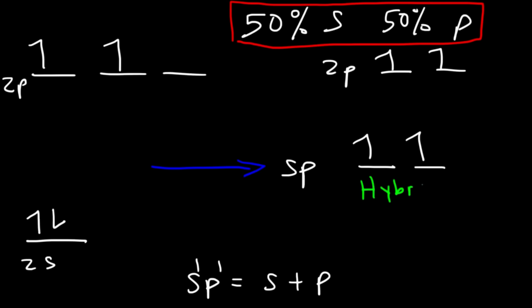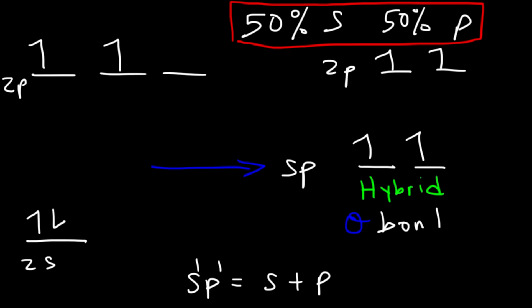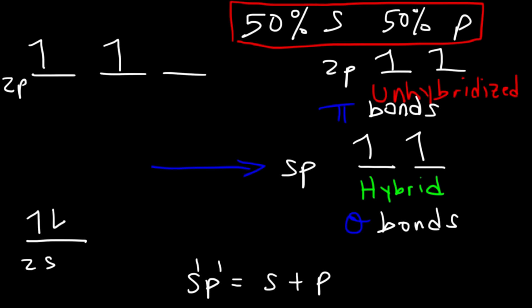Hybrid orbitals are used to form sigma bonds. The unhybridized p orbitals are used to make pi bonds, which we'll talk more about later. Pi bonds are always made from unhybridized p orbitals when dealing with carbon atoms, and sigma bonds form from the overlap of atomic orbitals — consisting of hybrid orbitals for the most part.